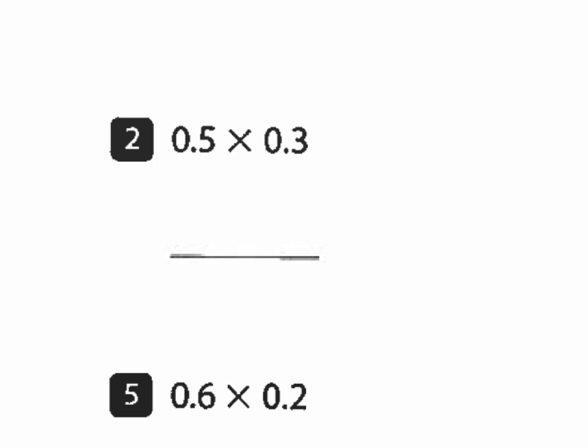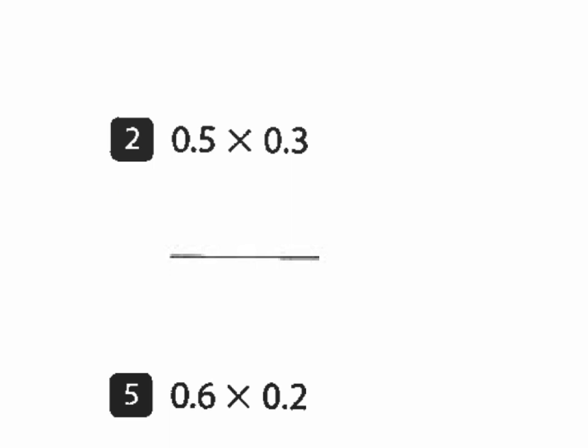Number two, I've got five tenths times three tenths. Again, I'm going to stack them up. Three times five is 15. I'm going to carry the one. Three times zero is zero, plus one more is going to be one. I could go ahead and multiply by zero, do zero times five, and then zero times one, but I know both of my numbers are going to be zero, so I'm not going to do that extra step.